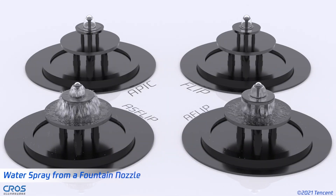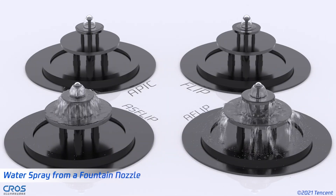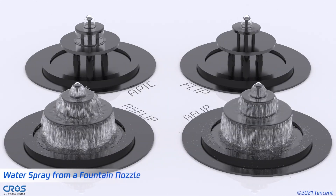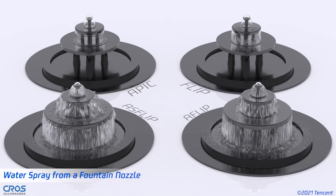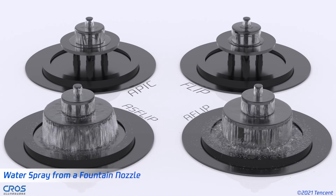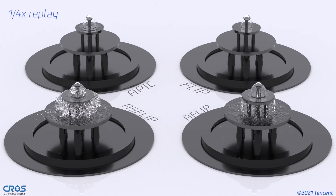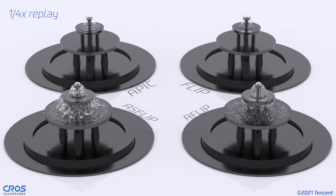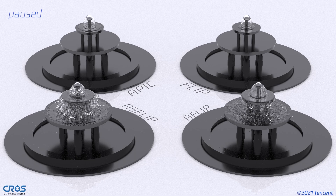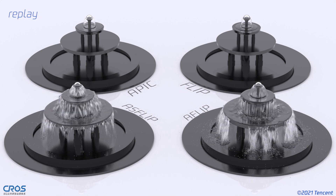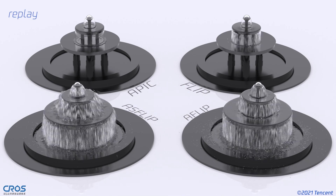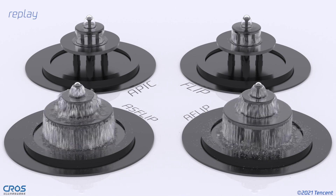We start by demonstrating the effectiveness of our method with this fountain. Our new velocity and position updating schemes can reduce excessive dissipation in grid-particle transfers. The fountain simulated with our schemes, AFLIP and ASFLIP, are more energetic than APIC and FLIP. Particles advected with ASFLIP are also easier to separate from each other, allowing them to be spouted faster from the nozzle.